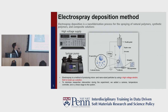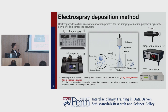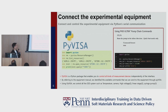In our case, we use the electrospray deposition method, which is a well-known spray coating method using high voltage and a syringe pump. In this technique, high voltage is applied to the needle point, an electrical field is created, and charged droplets go to the collector. To minimize researcher intervention during the experiment, we upgraded the experimental setup by adding a syringe pump, camera, temperature controller, and linear stage.